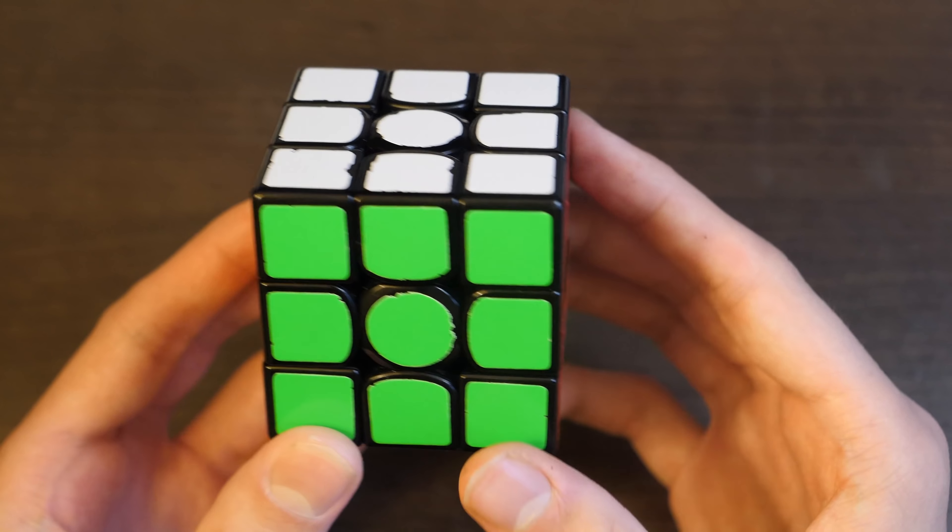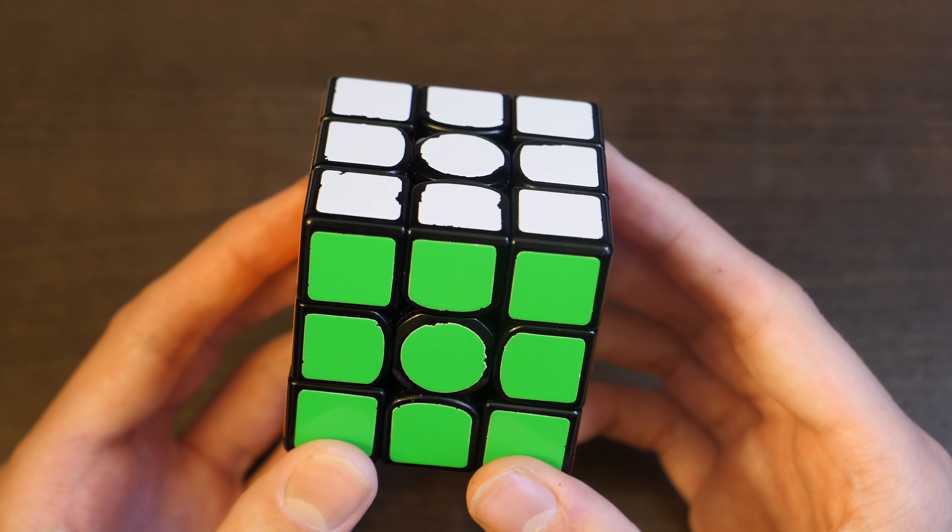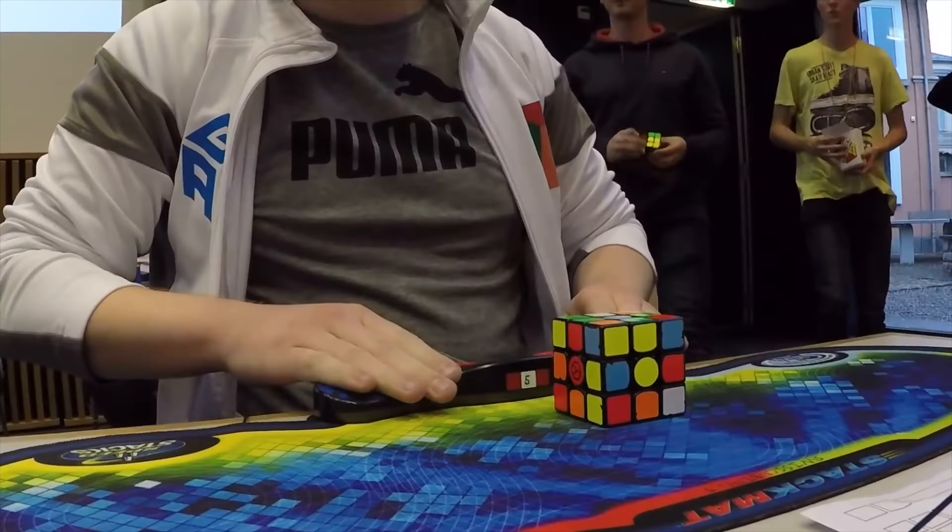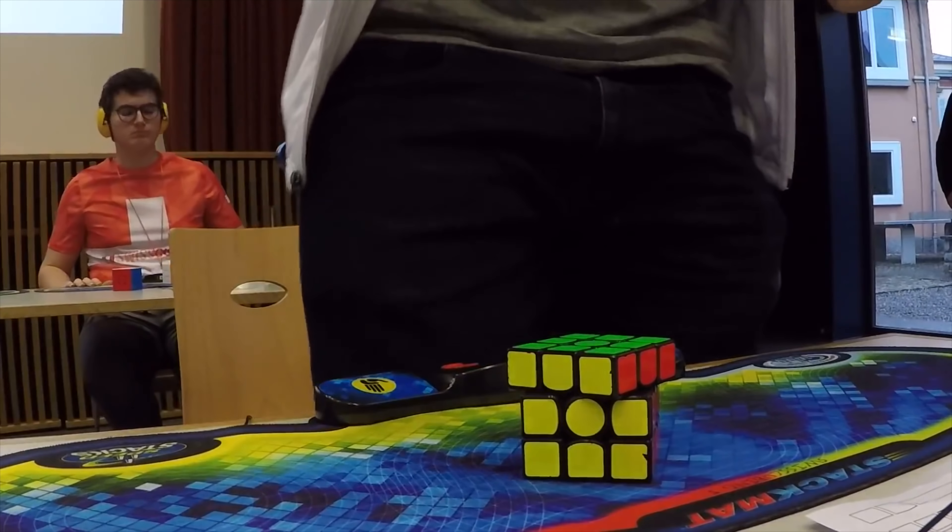Hello everyone, welcome back to LaserMonkey. Today I'll be breaking down Philip Weyer's 6.06 European record average, which he achieved at the Swiss Cubing Cup final in December of 2018. Felix was at that comp and he performed, but Philip beat Felix in two out of the three rounds and crushed him on this average. So let's get right into the solves.